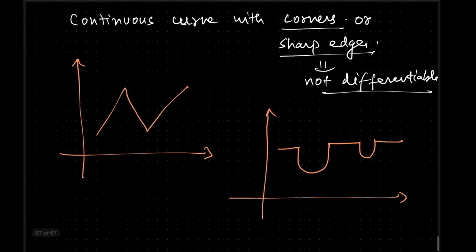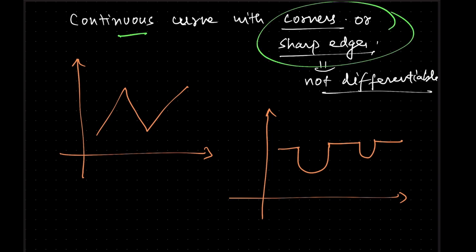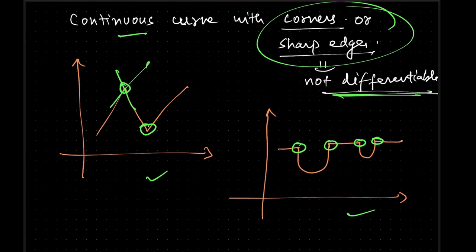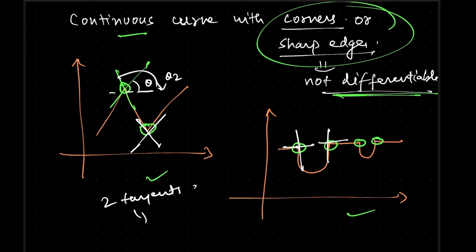A continuous curve with corners or sharp edges is not differentiable. At a sharp edge you will get two tangents — one makes angle theta 1 and the other makes angle theta 2. Similarly, at a corner you can get one horizontal tangent and one vertical tangent. When you get two tangents at one point, the function is not differentiable. You should always get a unique tangent at a differentiable point.